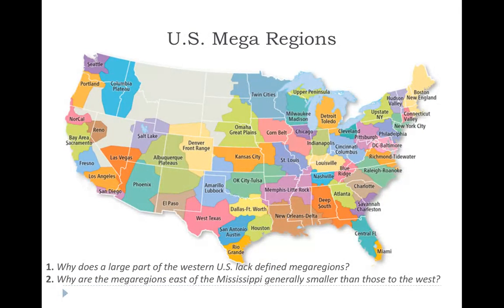We can see mega regions emerging from this concept. In the United States, much of Minnesota, parts of Wisconsin, and even parts of the Dakotas fall within the Twin Cities mega region — people from all those areas come to the Twin Cities for specific goods or services. Further east, mega regions are much smaller because there are more large cities; further west, there are fewer large cities, so people are willing to travel farther.